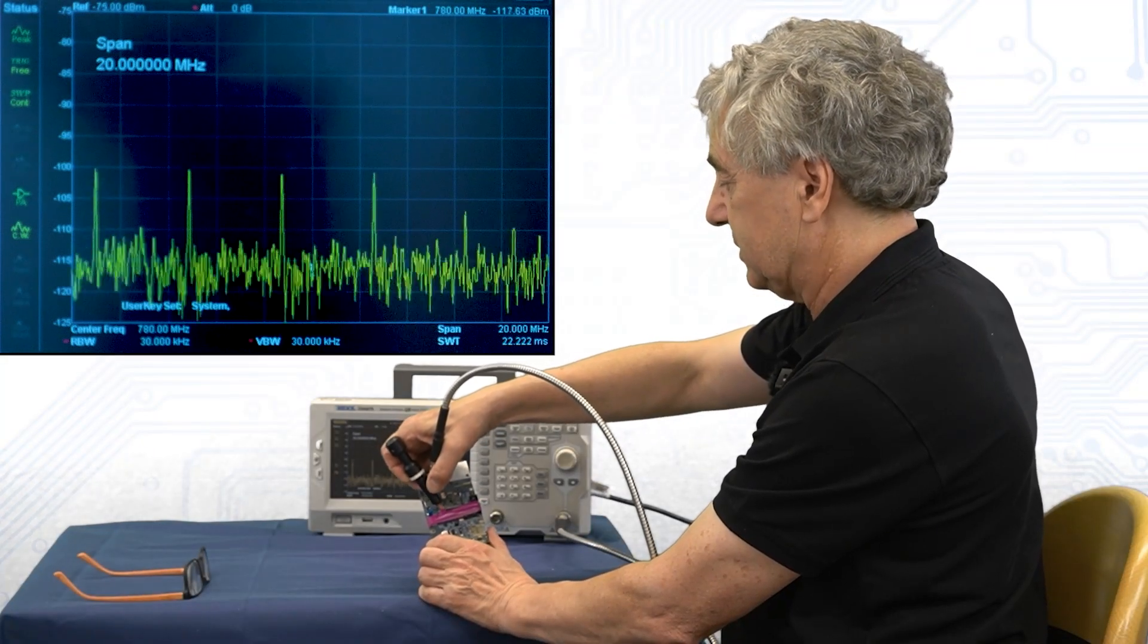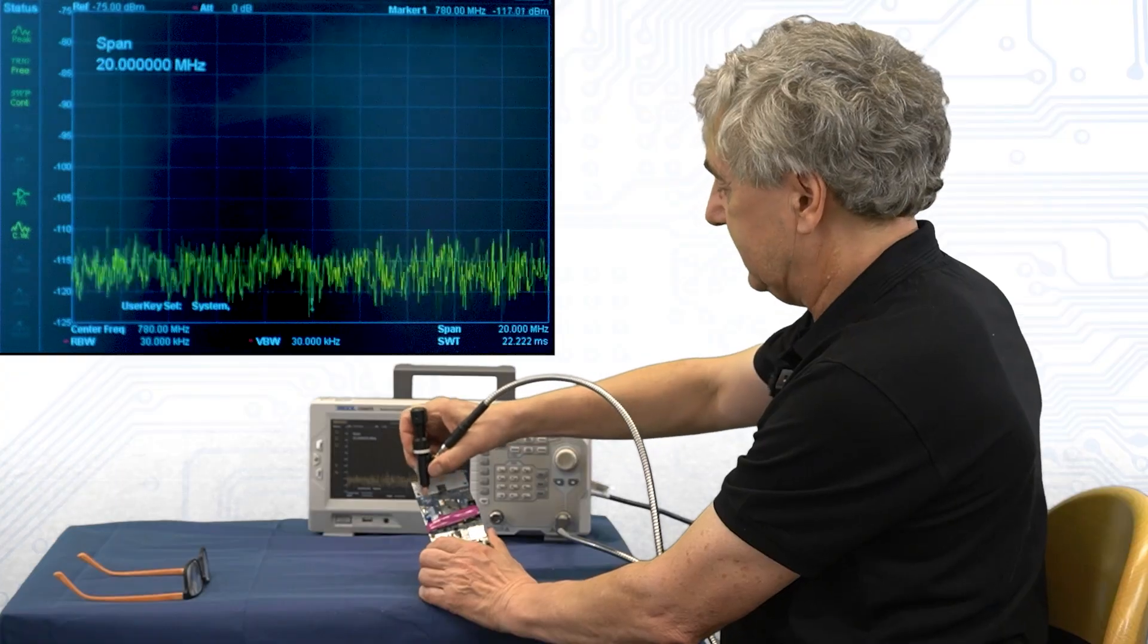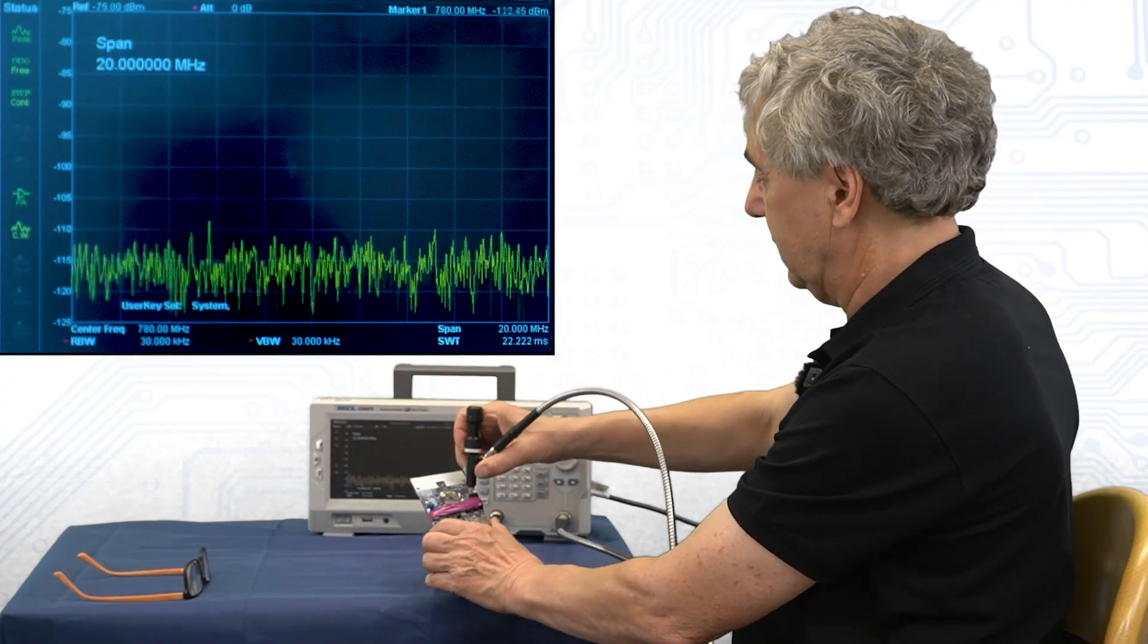The spectrum analyzer is now centered around 780 megahertz. If I scan the board I see a hotspot here, but on this antenna structure I see very little.